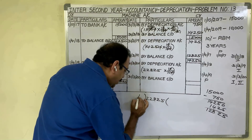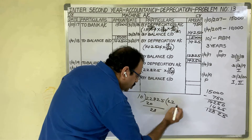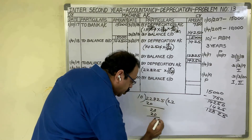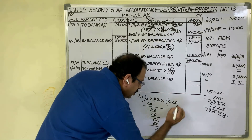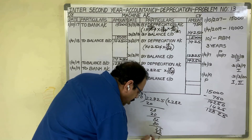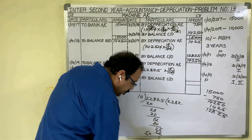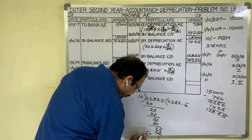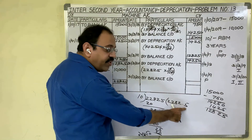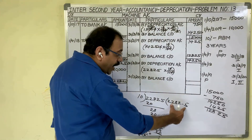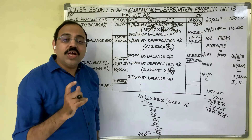This is an advantage of the diminishing balance method: when additions are made and all assets are used for the full year, you need not calculate depreciation separately. Simply add all written-down values and apply the rate once. So depreciation = 22,825 × 10% = 22,825 ÷ 10 = 2,282.5. The value comes in decimal, so we need to decide whether to take it as-is or round it to a whole number. It is always advisable to take the round figure.